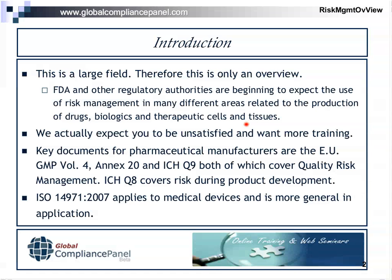For those of you who are pharmaceutical manufacturers, as opposed to device manufacturers, pharmaceutical manufacturers mainly need to be concerned with Annex 20 of the EU GMPs, and also ICH Q9, which covers quality risk management. For those of you with early products, ICH Q8 covers what they want to see as risk management during the early stages of product development. For the device people, your main document is ISO 14971, the 2007 edition, which covers a lot of the medical devices end of the subject.